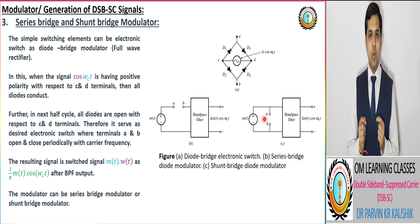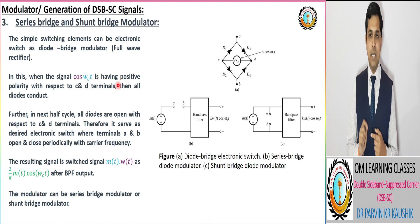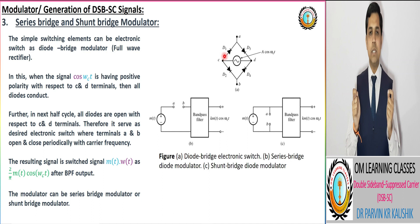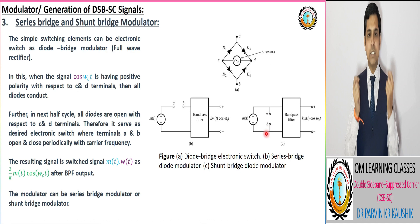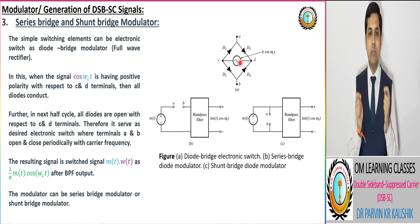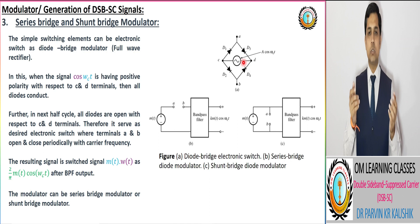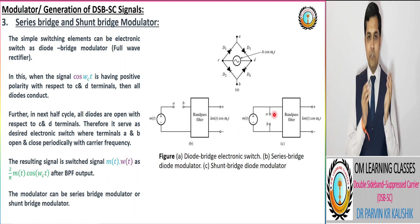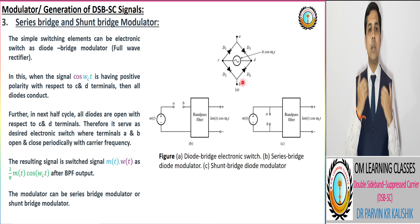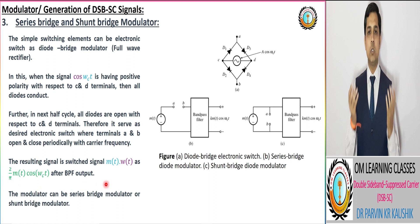As per working: when the carrier signal has positive polarity with respect to terminals C and D, then all the diodes are conducting — all diodes have forward bias condition and behave as short circuits. In the next half cycle — the negative half cycle of the carrier signal — all the diodes are reverse biased and behave as open circuits with respect to terminals C and D. So the switching operations on and off correspond to the carrier signal.